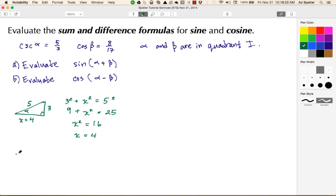Now let's create a special triangle for cosine beta. This is angle beta, and we know that cosine's relationship is adjacent over hypotenuse. In this case, the adjacent side is 8 and the hypotenuse is 17, and we need to figure out this side. I'll call that y.